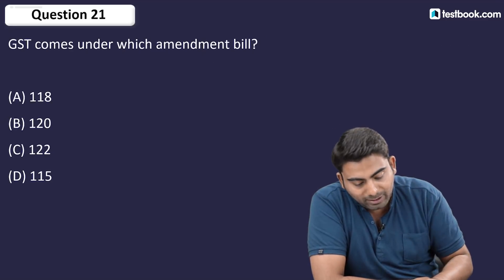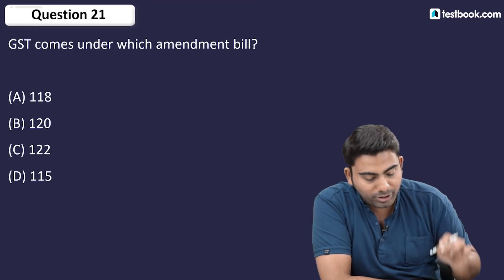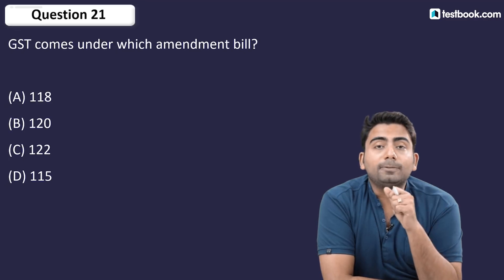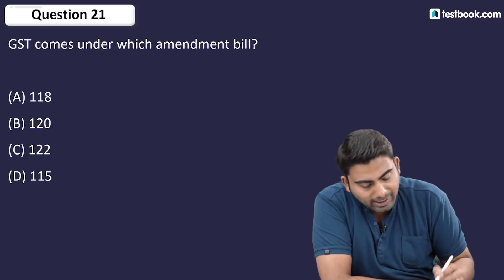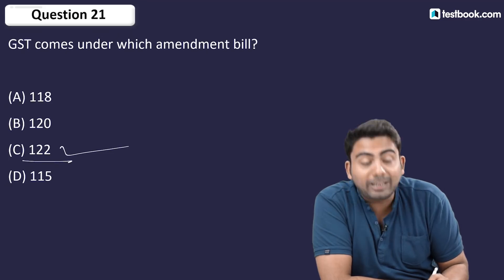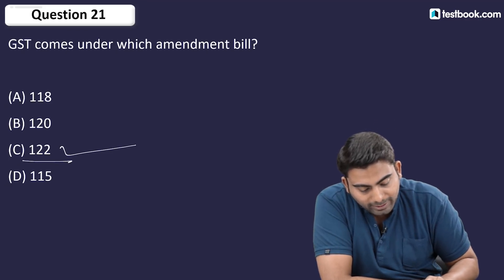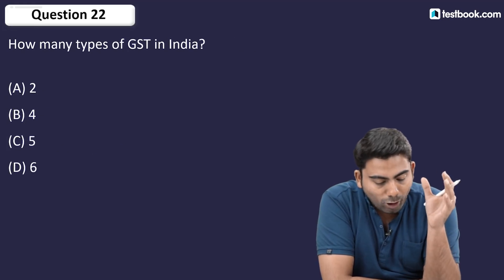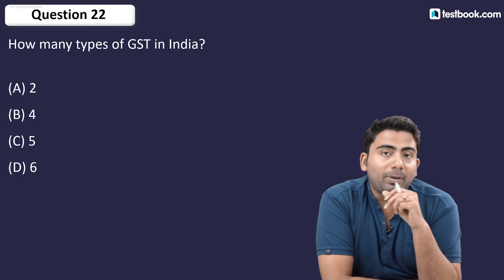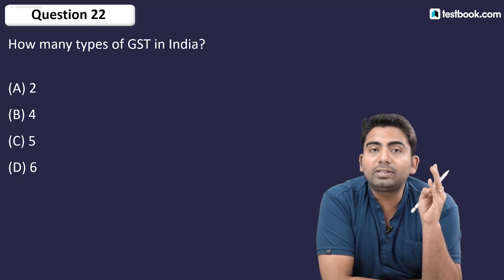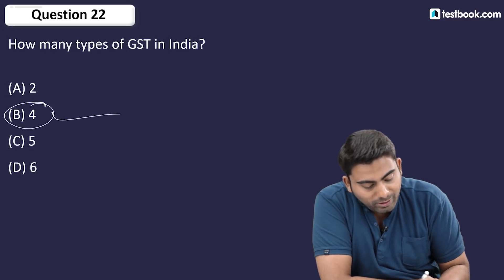Question number 21: GST comes under which amendment bill? The answer is the 122nd Amendment Bill. Question number 22: How many types of GST are there in India? The answer is 4 — CGST, SGST, IGST, and UTGST.